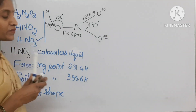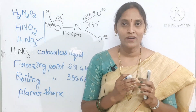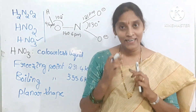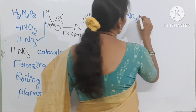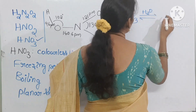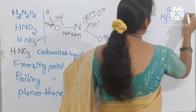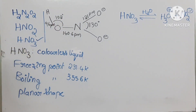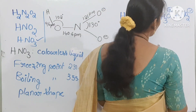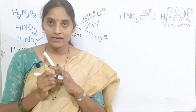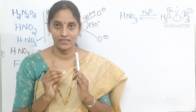Generally, nitric acid is a strong acid. In aqueous medium, HNO3 in the presence of water will form hydronium ions (H3O+) and nitrate ions (NO3 minus). So it is a strong acid that in aqueous medium forms hydronium ions and nitrate ions.